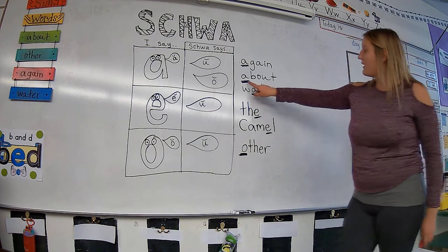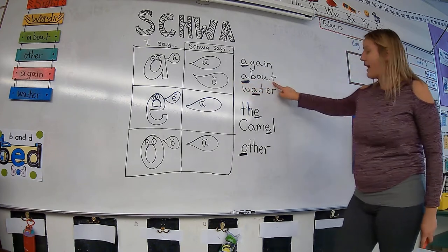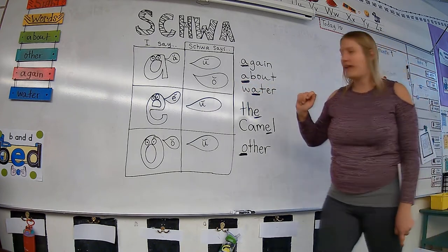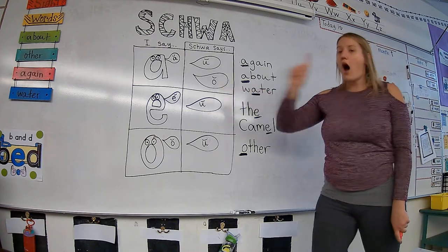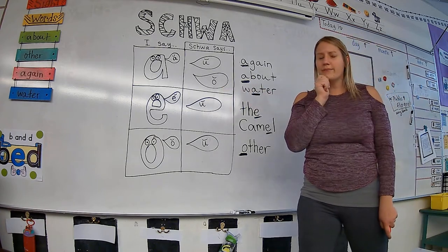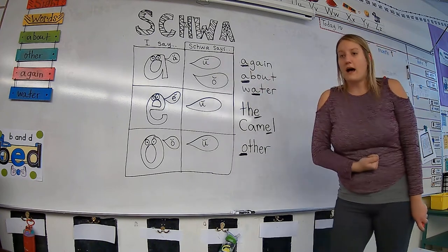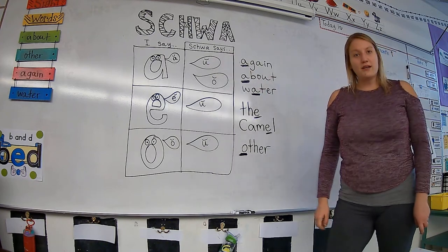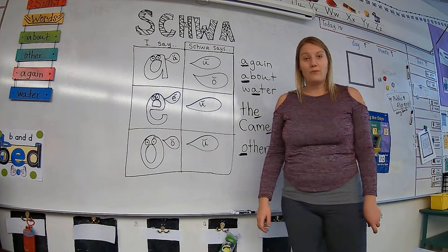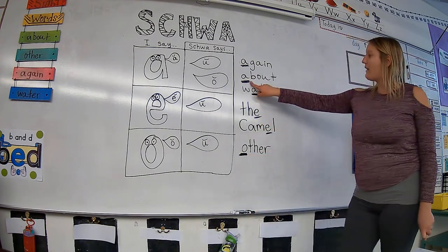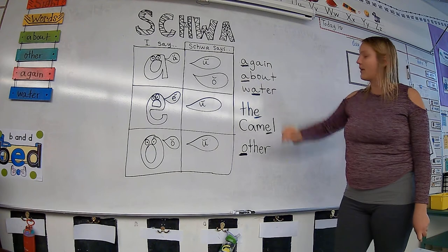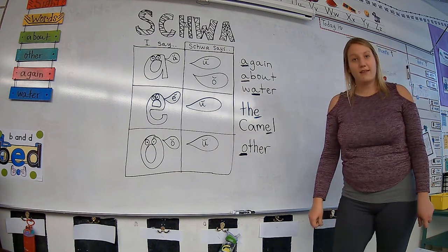Then we have this word here. Ah-bout. Ah-bout doesn't make sense. Let's try this sound. A-bout. No, that doesn't make sense either. What about this sound? Uh-bout. About is a word that we do know. So notice how I just had to change my sound for the letter A and it made sense for me.